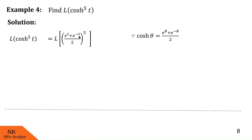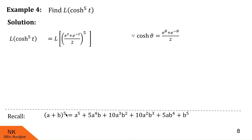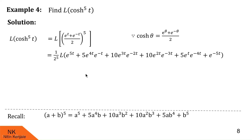To expand (e^t + e^(−t))⁵, we use the binomial expansion of (a+b)⁵, recalling Pascal's triangle. With a = e^t and b = e^(−t), the expansion gives: e^(5t) + 5e^(4t)·e^(−t) + 10e^(3t)·e^(−2t) + 10e^(2t)·e^(−3t) + 5e^t·e^(−4t) + e^(−5t). You can pause the video and check this entire expansion.